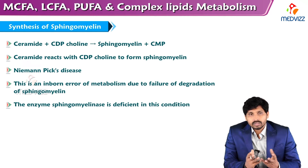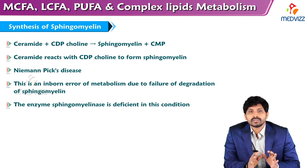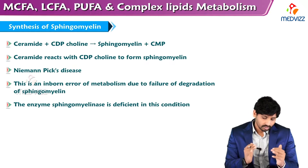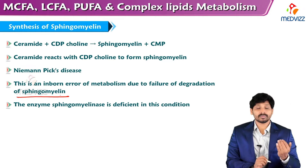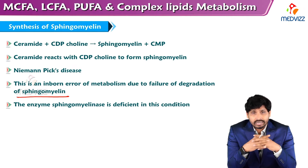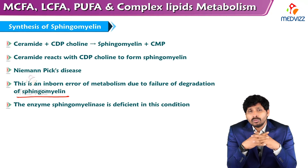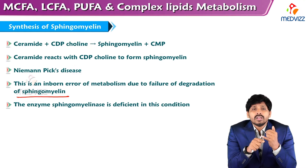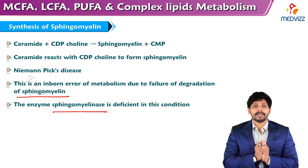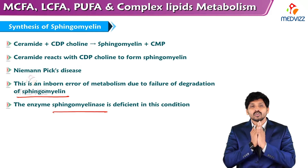Ceramide reacts with CDP-choline to give rise to sphingomyelin, releasing CMP (cytidine monophosphate). In Niemann-Pick's disease, there is an inborn error of metabolism due to failure of degradation of sphingomyelin. Every substance synthesized in the body must also be degraded; if there is a defect in degradation, it accumulates inside the cell and causes disorder. The accumulation of sphingomyelin in cells causes Niemann-Pick's disease — the deficient enzyme is sphingomyelinase.